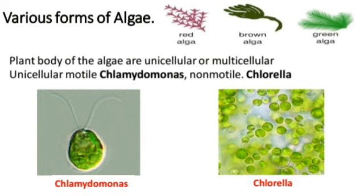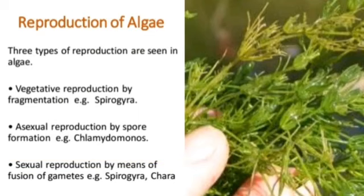There are three types of reproduction in algae. First, vegetative reproduction by fragmentation - example is Spirogyra. Second, asexual reproduction by spore formation - example is Chlamydomonas, which inherits characteristics from the parent. Third, sexual reproduction by means of fusion of gametes - examples are Spirogyra and Chara.